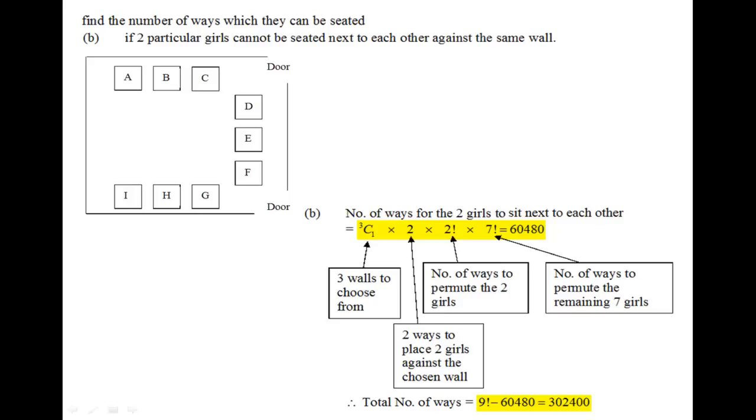So for these two girls to sit next to each other against the same wall, there are three possible ways of placing them against the same wall. Therefore, firstly we have three choose one, because we have three walls to choose from. And because they have to sit next to each other, suppose we look at this side of the wall whereby we have A, B, and C over here, essentially there are two ways to place these two girls against this chosen wall.